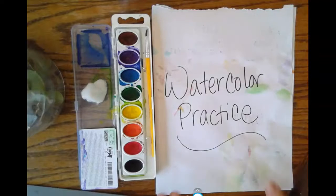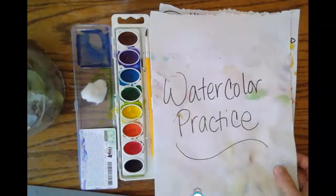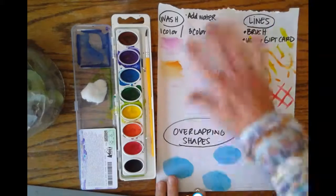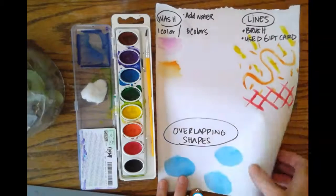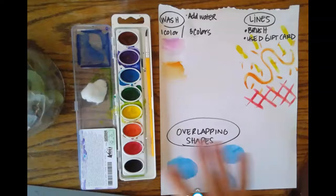The first thing that you want to think about is getting some scratch paper to paint on. The scratch paper can be anything—it can be the back of old printer paper, just anything that has a lot of space for you to paint and explore.